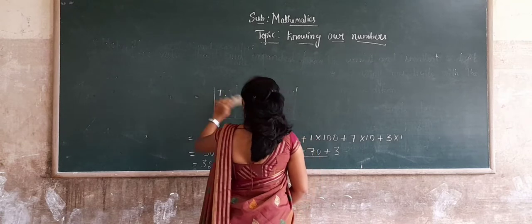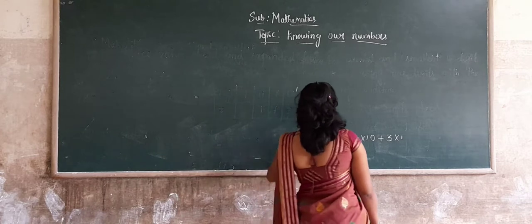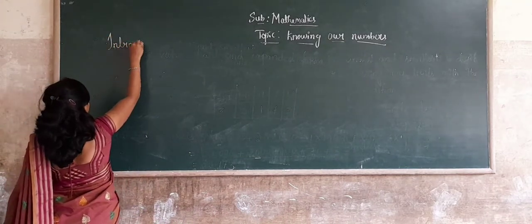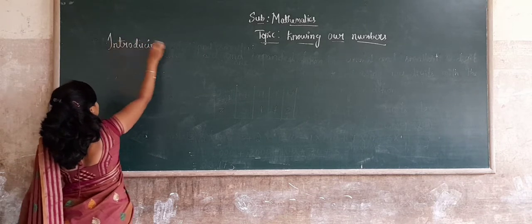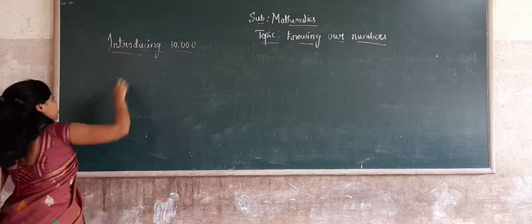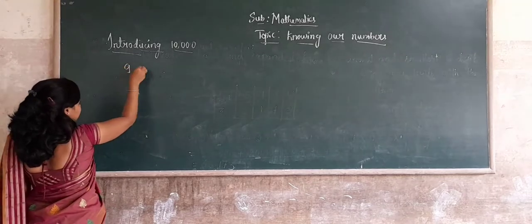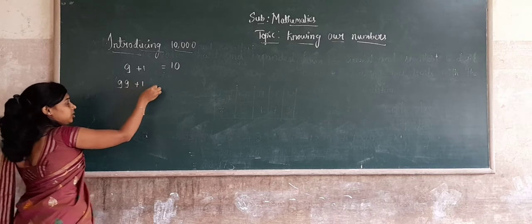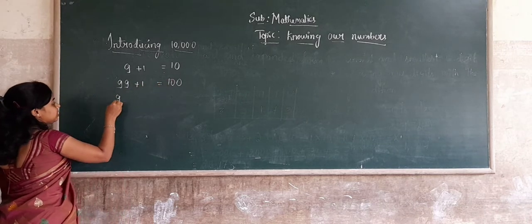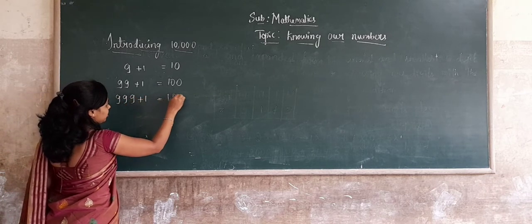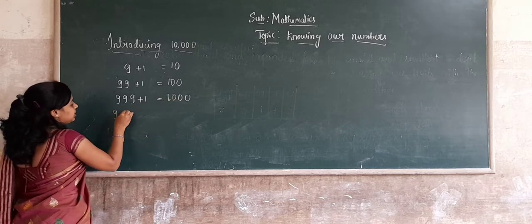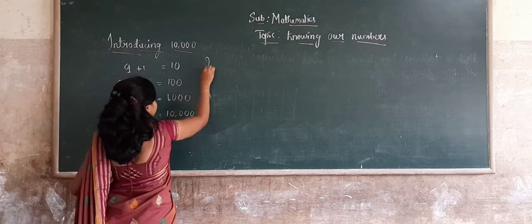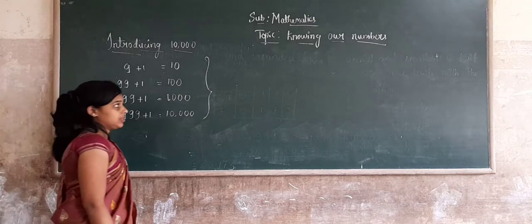Now, introducing 10,000. You know that the greatest 2-digit number is 99; add 1, we get 100. The greatest 3-digit number is 999; add 1, we get 1,000. The greatest 4-digit number is 9,999; add 1, we get 10,000. This is how we introduce the 10,000 in our number system.